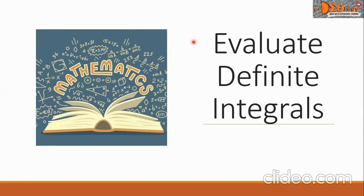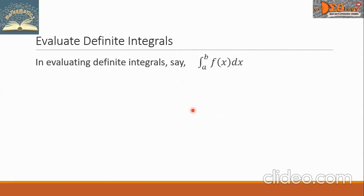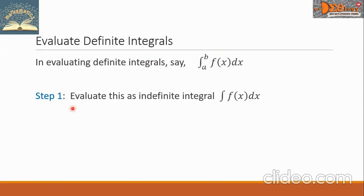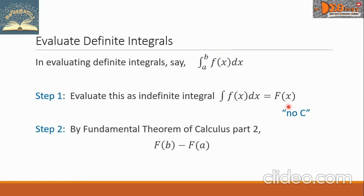Today we are going to evaluate definite integrals. In evaluating the definite integral from a to b of f of x dx, step one is to evaluate it as an indefinite integral — that is, find the integral of f of x dx, resulting in capital F of x. This time we will not add the constant c. Step two, by the Fundamental Theorem of Calculus Part Two, we evaluate capital F of x with respect to the limits of integration: F of b minus F of a.